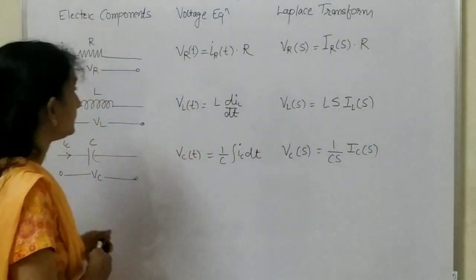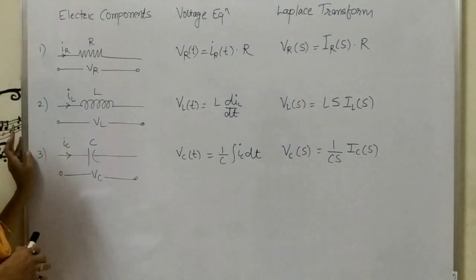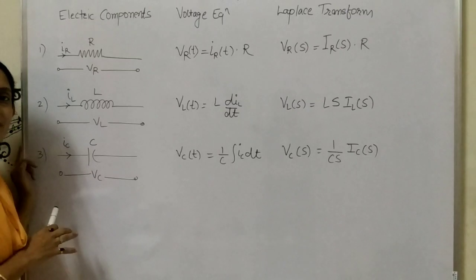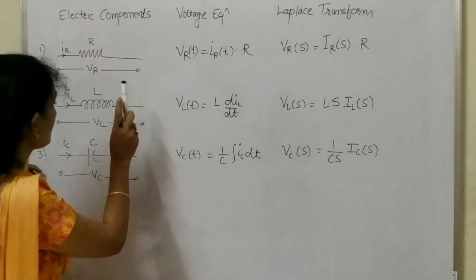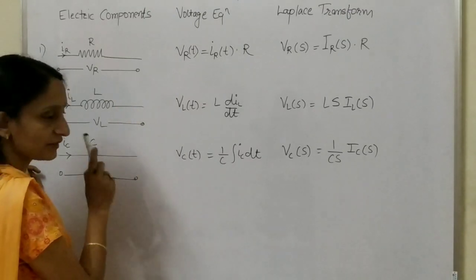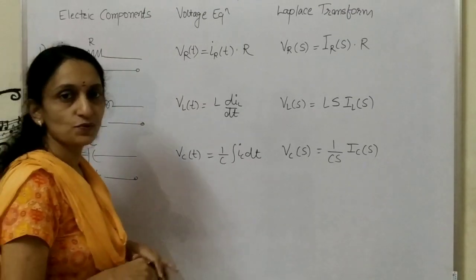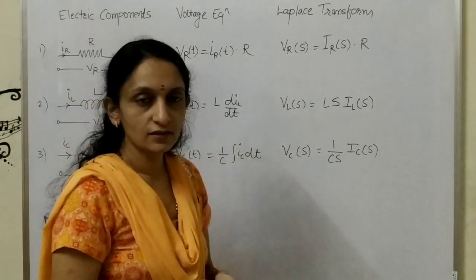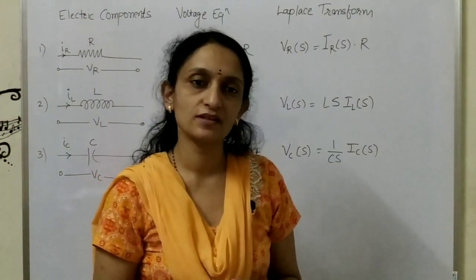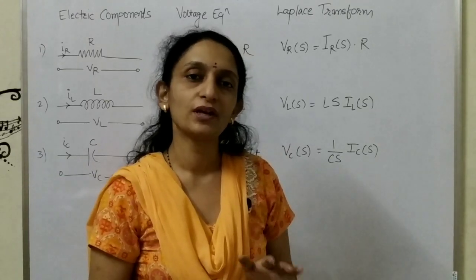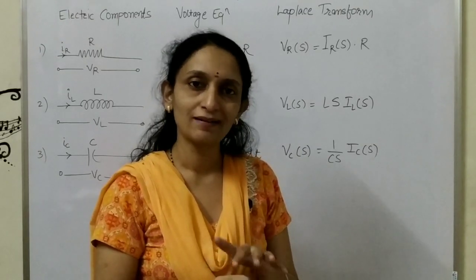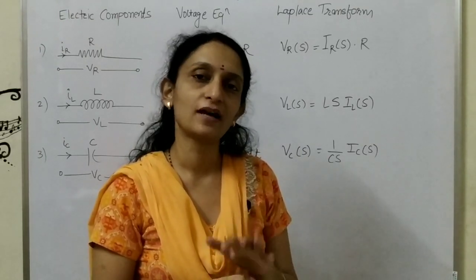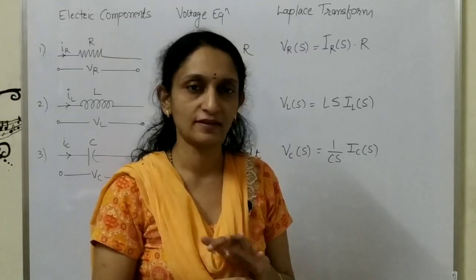These are the basic components of the electrical system, as you have already studied in network theory. The first component is resistor, the second is inductor, and the third one is capacitor. When there is a series circuit, we apply KVL — that is Kirchhoff's voltage law. If a parallel circuit is there, we will apply KCL, that is Kirchhoff's current law.